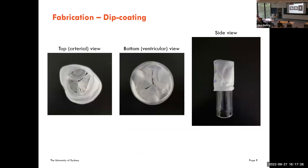After establishing the valve design, we make a mold that matches that design. We use dip coating for fabrication — taking the mold, dipping it in a polymer solution, letting it set, and carefully removing the mold. For this valve we also added a conduit around it, and you can see the result from the top, bottom, and side views. The material is quite thin, just like native heart valves.